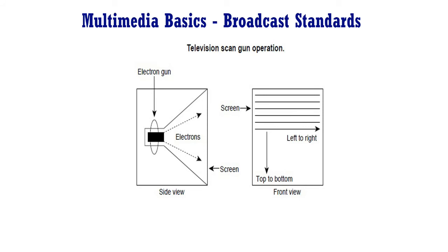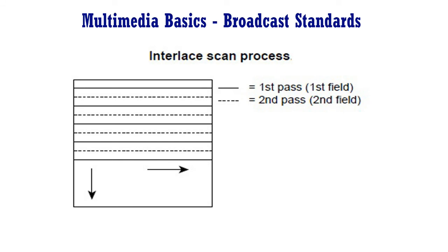To combat fading, NTSC adopted an interlace technique so that on the first pass from top to bottom, only every other line is scanned. With NTSC, the first pass scans 262 lines. The second pass scans another 262 lines to fill in the rest of the TV image. A frame represents the combination of these two passes, known as fields, as shown in the figure.